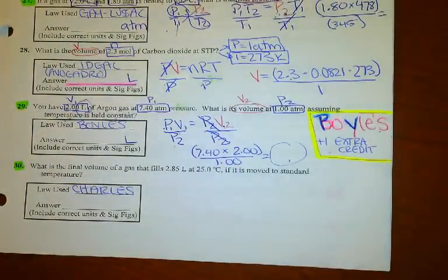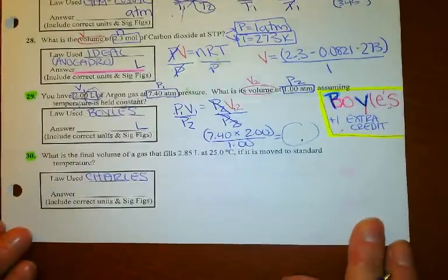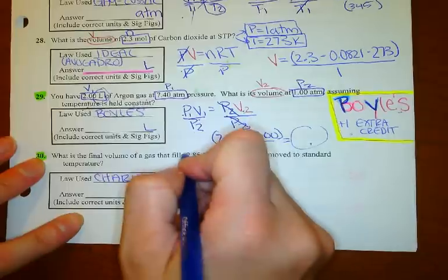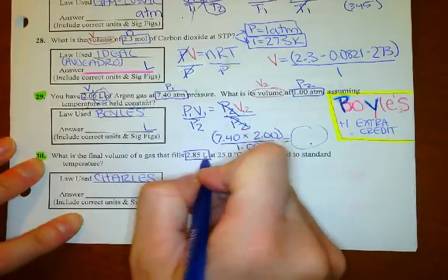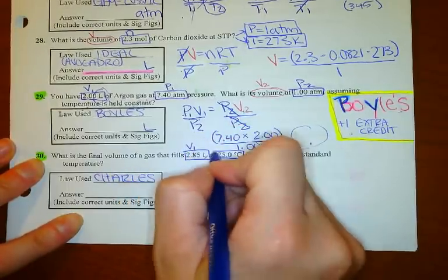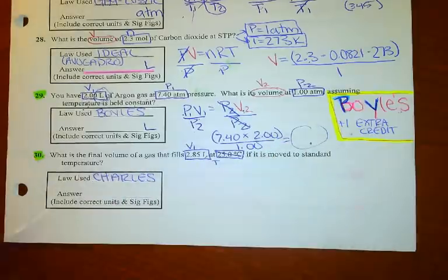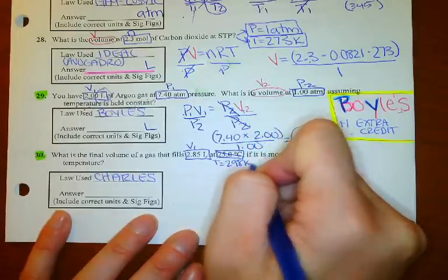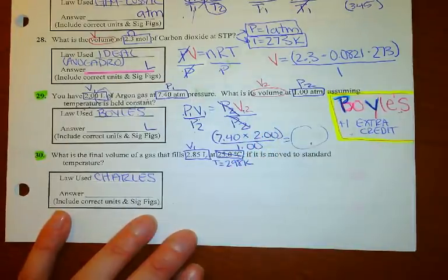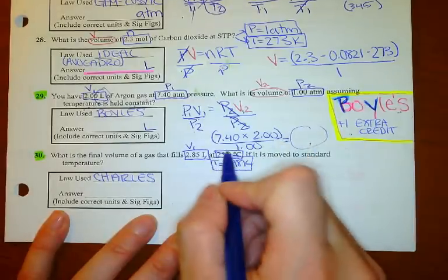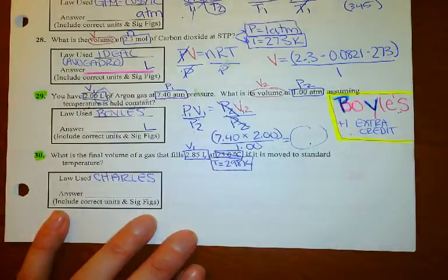For number 30, here's our Charles Law. Charles watches Direct TV — I know it's Charles because I'm given liters, and liters or milliliters tells me it's volume. At this temperature, I cross out Celsius and add 273, because I can only calculate in Kelvin. You will not pass this test if you forget to convert to Kelvin. If you leave everything in Celsius, you will fail the test.